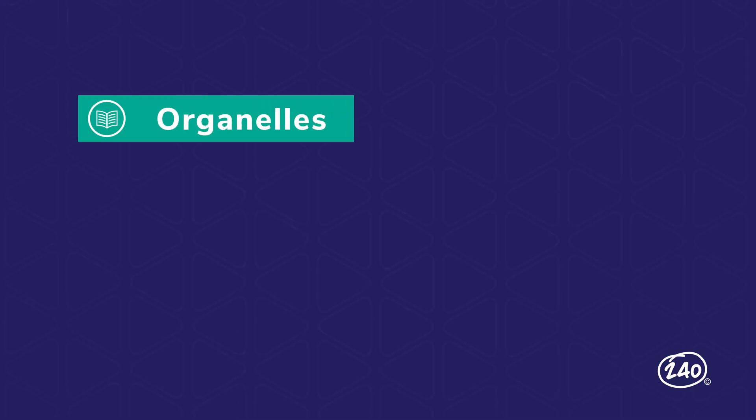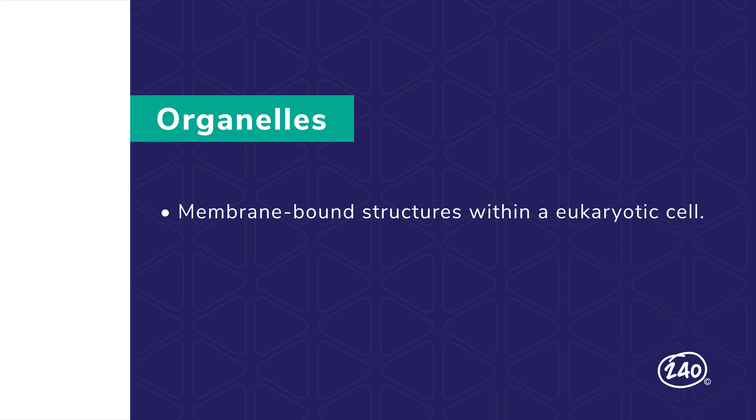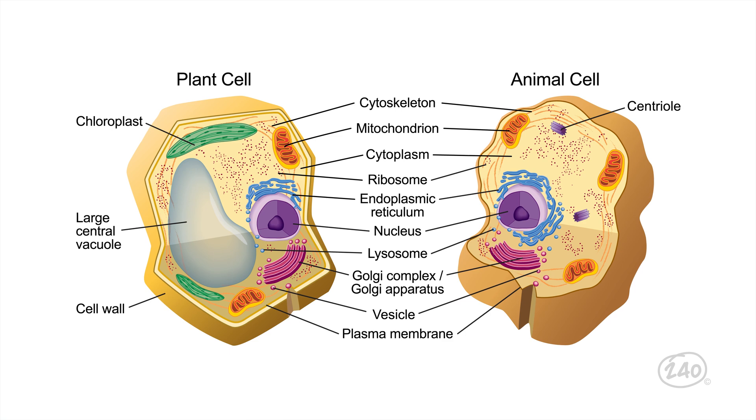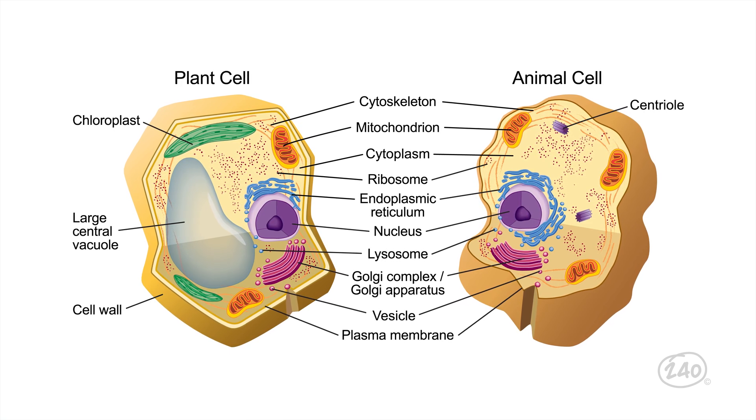All cells are composed of many smaller structures that perform specific jobs. Organelles are membrane-bound structures within a eukaryotic cell. You can think of them as little organs for the cell, hence the name organelles. Certain cells will have fewer or greater specific organelles, depending on the cell's job. Take a look at these generic plant and animal cells. The organelles have been labeled. You can see how many terms you'll need to know.